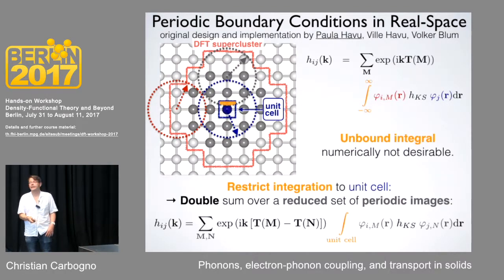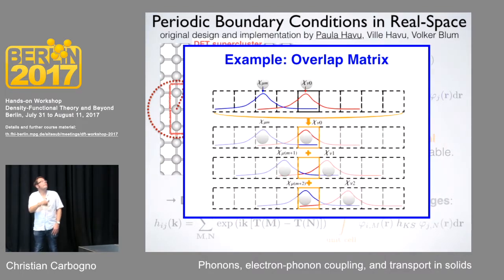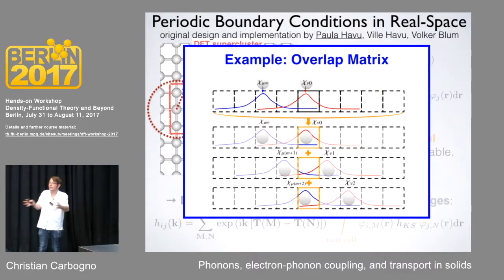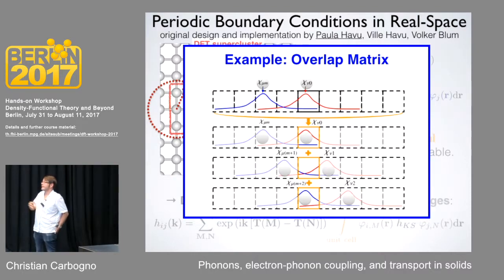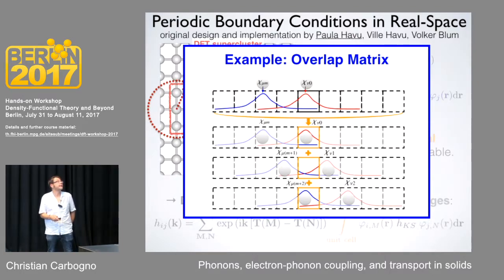If you look at something like an overlap or Hamiltonian, you integrate just over the unit cell. To get such an integral, you sum over different copies of these pairs — shifted again and again — and always sum over the unit cell, which gives you the complete integral. This is done at a normal DFT level, and this is why a periodic calculation is typically more expensive than a simple molecule calculation with the same number of atoms.